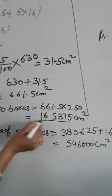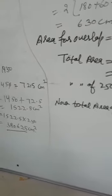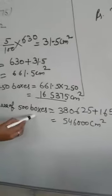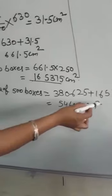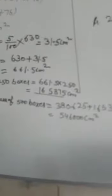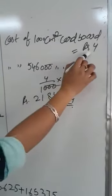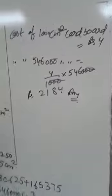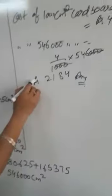Now this is the area for 250 small boxes and this is the area for 250 bigger boxes. So we will add these two areas for total area of 500 boxes. That will be 5,46,000 cm square. Now in question we have to find the cost. It is given the cost of 1000 cm square is rupees 4.